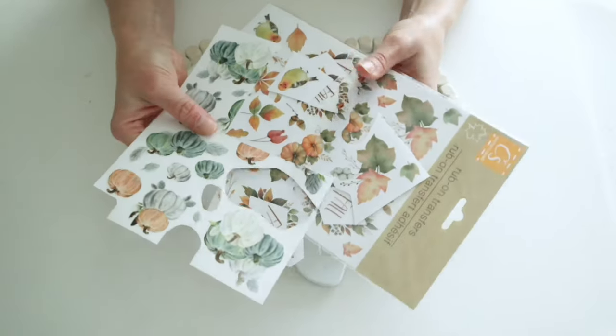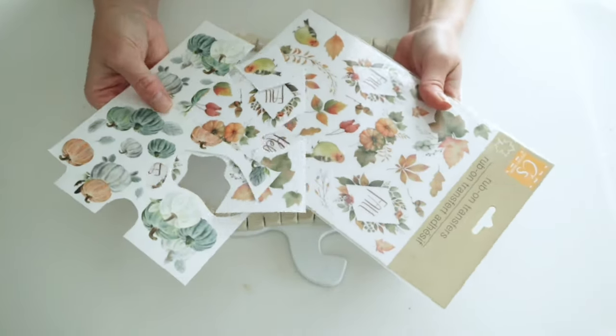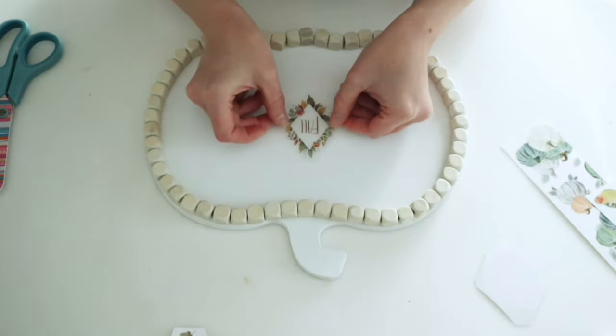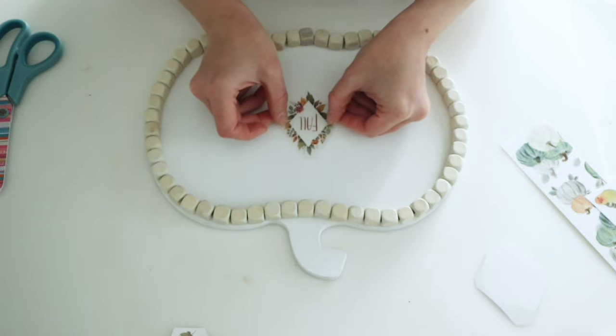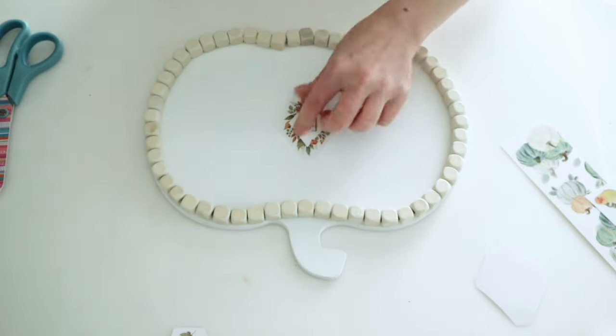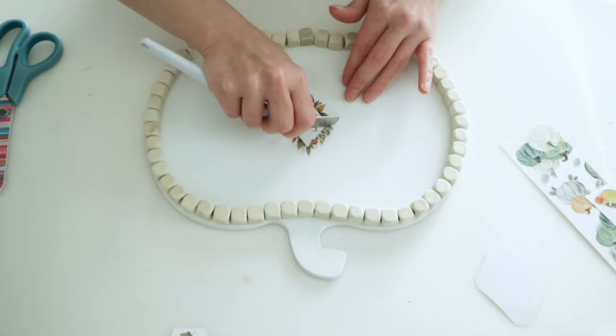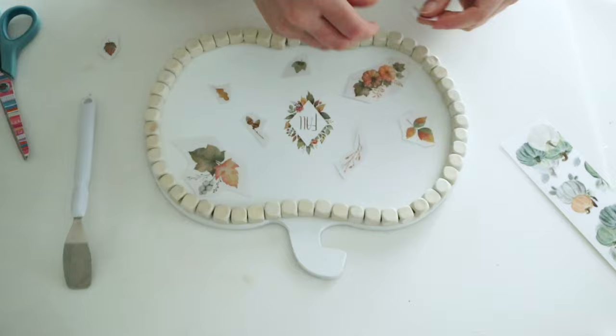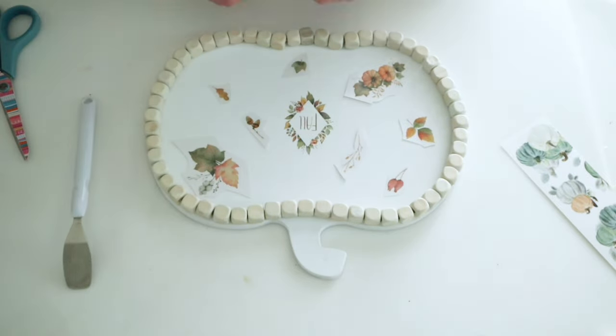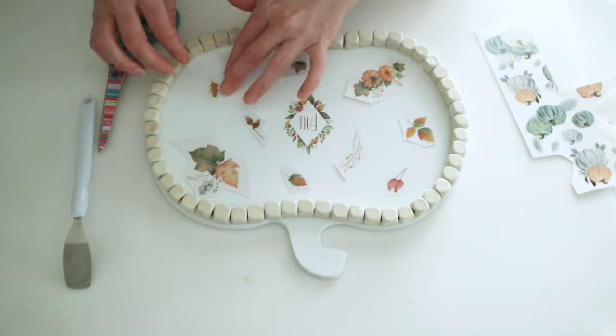And I'm just going to pick out a few that I liked. I wanted this fall one in the center. And I went ahead and rubbed that one on. And then I'm going to cut out a few and kind of arrange them where I thought I wanted them. And then I will just rub all of those onto the tray.